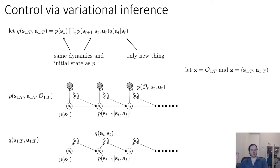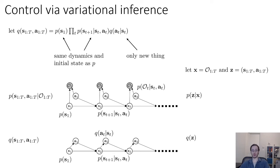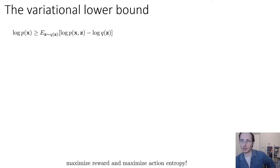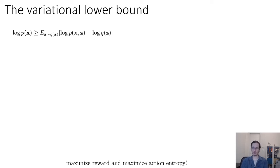To tie this back to variational inference: X (observed variables) is O_1 through T, and Z (latent variables) corresponds to S_1 through T and A_1 through T. The variational lower bound says log P(X) is greater than or equal to the expected value under Q(Z) of log P(X, Z) minus log Q(Z). Substituting our definitions, the bound expands to include log P(S_1), sum of log transition probabilities, and sum of log optimality variable probabilities, minus the entropy terms from Q — which include minus log P(S_1), minus log transition probabilities, and minus log Q(A_t | S_t).